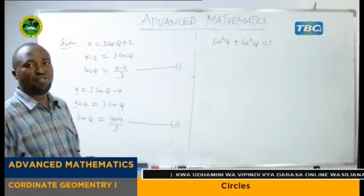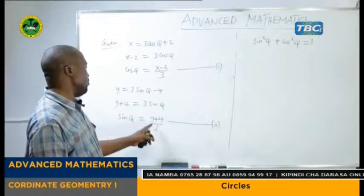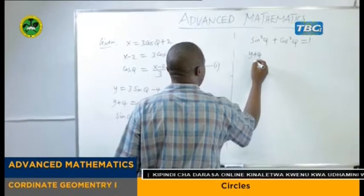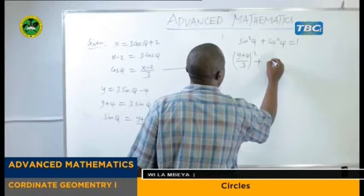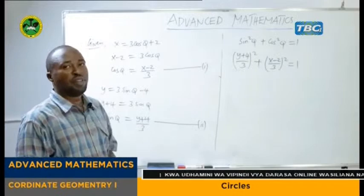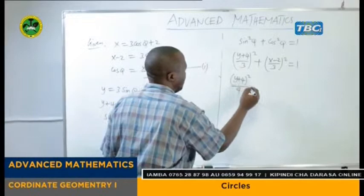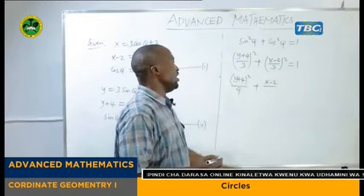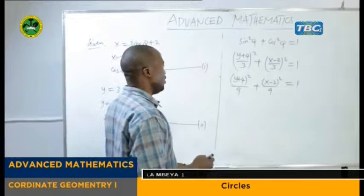So we can substitute values of sin θ and cos θ in that equation. For sin θ we have (y + 4) over 3, and this one is squared. Then followed by cos θ, that is plus (x minus 2) over 3 squared, is equal to 1. Now in this case let us open up the brackets: we are going to have (y + 4) squared over 9 plus (x minus 2) squared over 9, which is equal to 1.